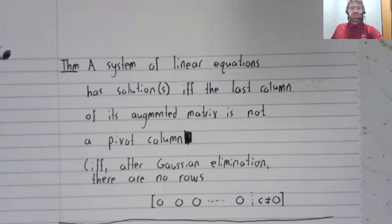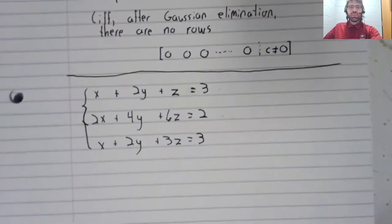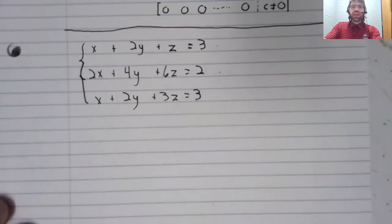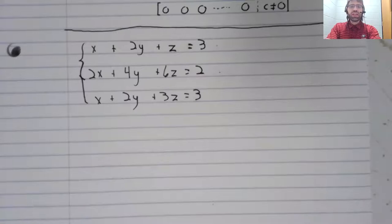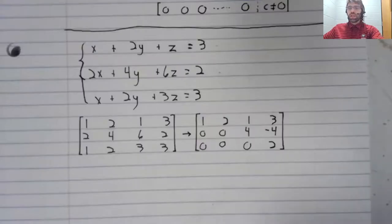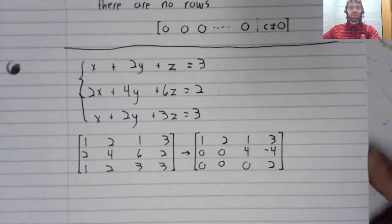we should write down its augmented matrix, perform Gaussian elimination and look for rows like this, where everything is zero except for the last entry. Let's now do that. Once again, I'll perform the Gaussian elimination off camera. Here is the augmented matrix after we perform Gaussian elimination.